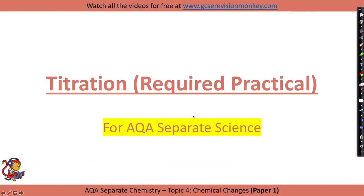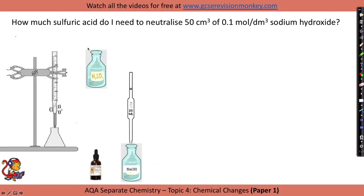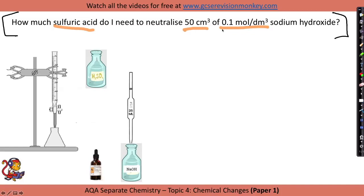Titration required practical — this is for separate scientists only. With a titration, we might be asked: how much sulfuric acid do I need to neutralise 50 cm³ of 0.1 mol/dm³ sodium hydroxide? In the exam, whatever way you put it around is fine. I'm going to put the acid in the burette and the alkali in the conical flask at the bottom.